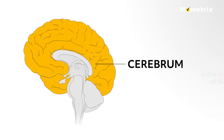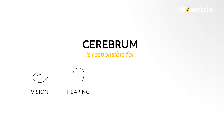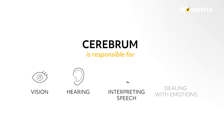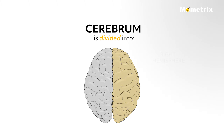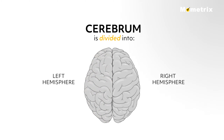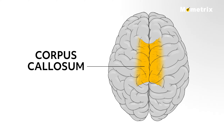The cerebrum is the largest part of the brain and is responsible for vision, hearing, interpreting speech, and dealing with emotions. The cerebrum is divided into the right and left hemispheres and is joined in the middle by a bundle of fibers called the corpus callosum.